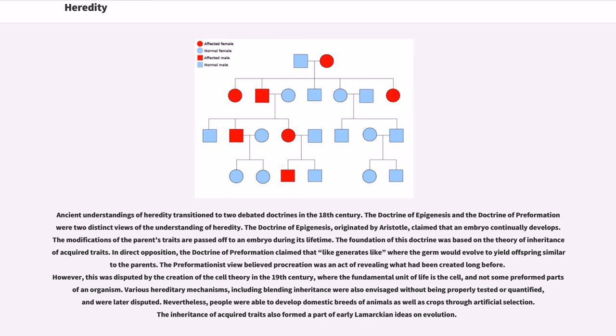Ancient understandings of heredity transitioned to two debated doctrines in the 18th century. The doctrine of epigenesis and the doctrine of preformation were two distinct views of the understanding of heredity. The doctrine of epigenesis, originated by Aristotle, claimed that an embryo continually develops. The modifications of the parent's traits are passed off to an embryo during its lifetime. The foundation of this doctrine was based on the theory of inheritance of acquired traits.